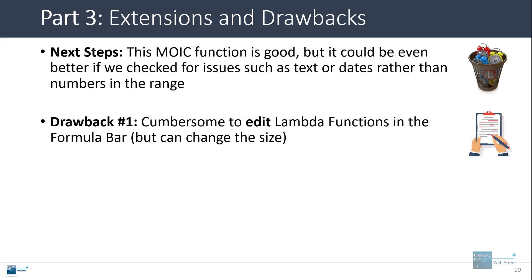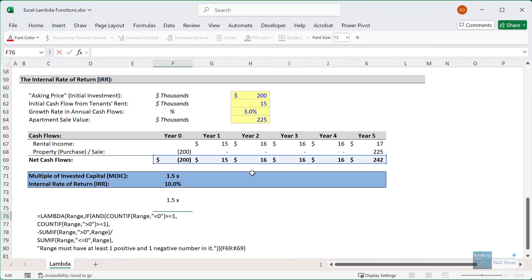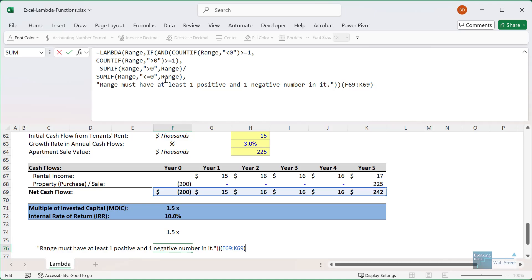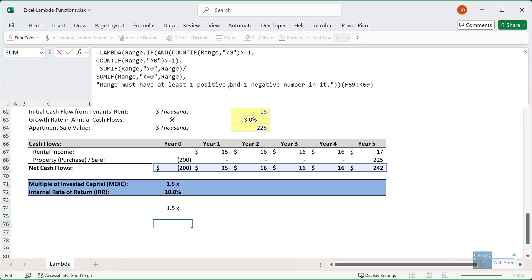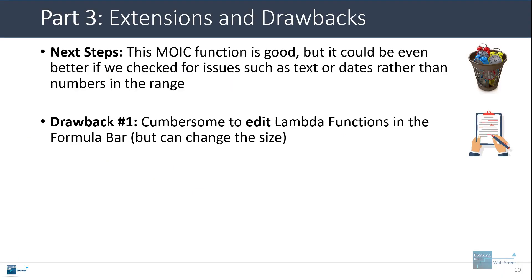In terms of drawbacks to lambda functions, the first one, as I showed you before, is that they are a little cumbersome to edit. When you look at the length of these functions and the way it normally shows up in the formula bar, you can certainly extend it as I've been doing, you can use alt enter to add some line breaks, but it still gets complicated. And if you get into something with 20 or 30 commands in it or something like that, it presents the same problem as having a long and complicated Excel formula. It's hard to understand what's going on.